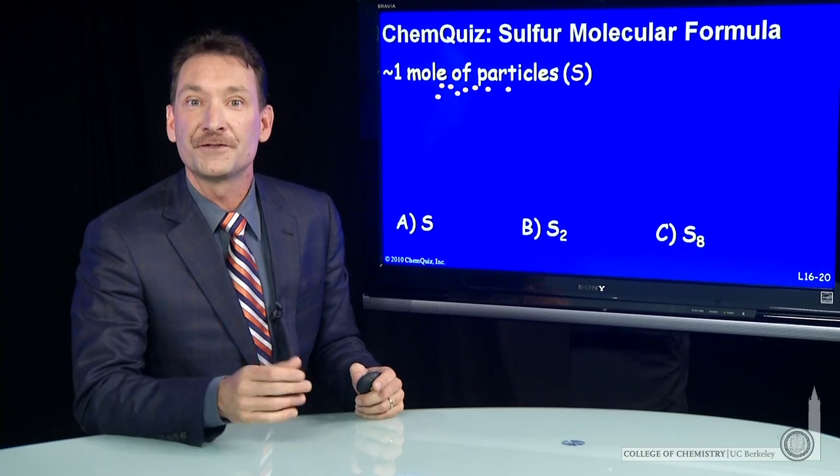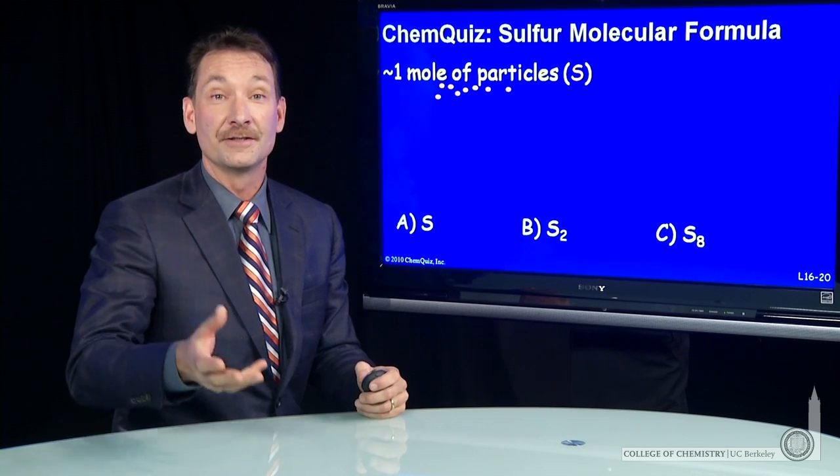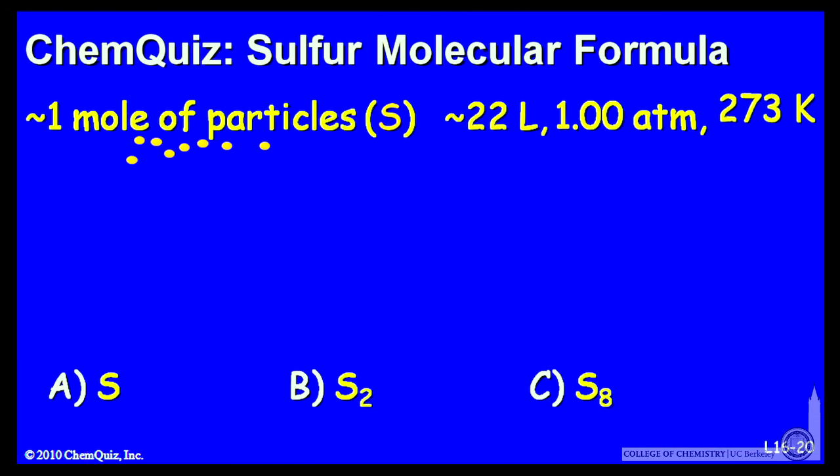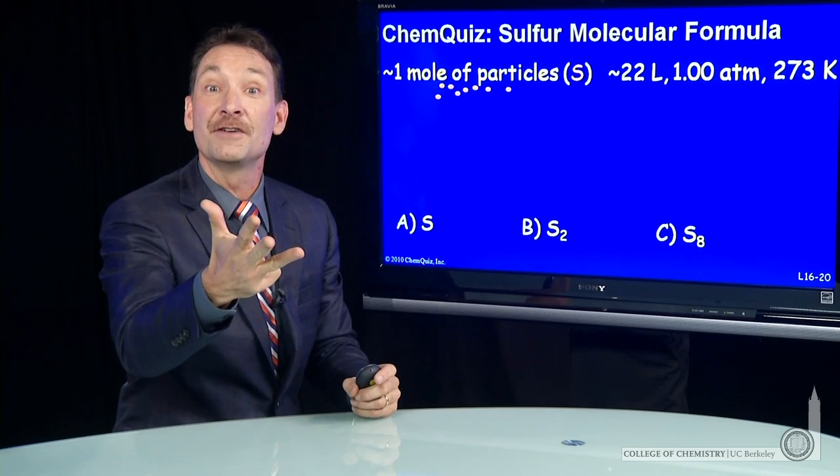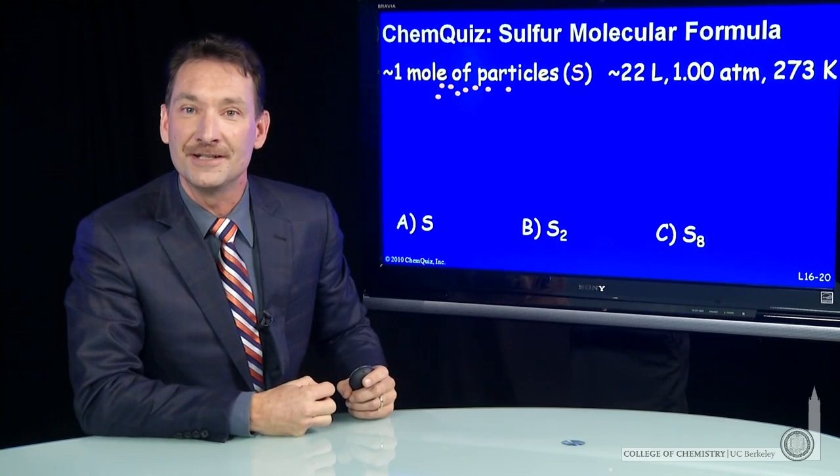We're talking about a mole of sulfur particles. Now if I have a mole of particles at 22 liters, 1 atmosphere of pressure, and 273 K, those variables make sense. One mole, 22 liters, 1 atmosphere, and 273 K all agree with the ideal gas law.